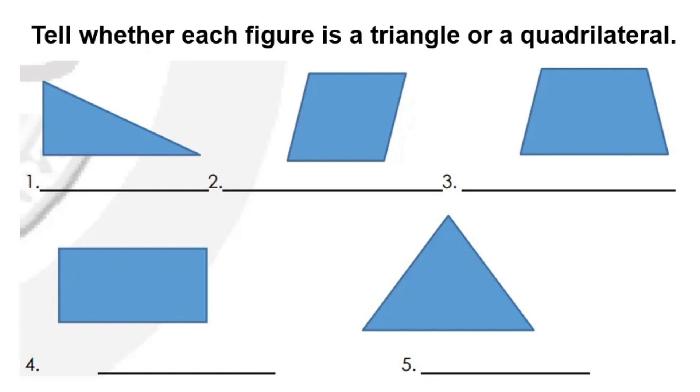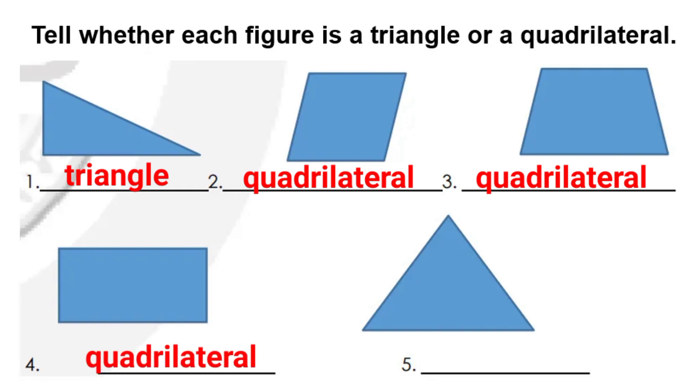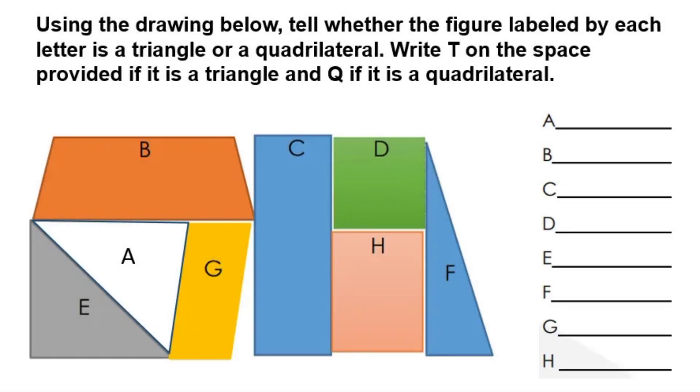Now let's try to identify whether each figure is a triangle or a quadrilateral. Using the drawing below, tell whether the figure labeled by each letter is a triangle or a quadrilateral. Write T on the space provided if it's a triangle and Q if it's a quadrilateral.